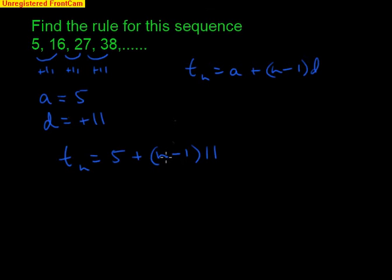Now that is a rule that would generate any terms in the sequence, but we can simplify it to look a little bit better. So I'll just do a very small amount of algebra here. The nth term then is equal to 5 plus, and what I'm going to do is multiply this bracket out. So I'm going to multiply the n times the 11 and then multiply the minus 1 times the 11, just for a little simplification.